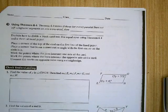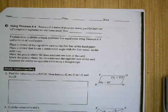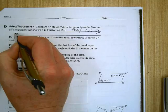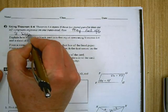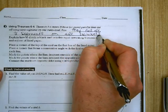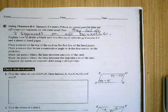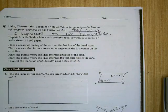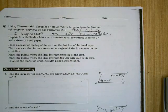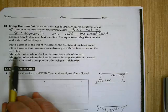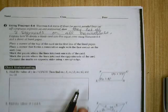Okay. Next page. Using theorem 6-4. Explain how to divide a blank card into 5 equal rows using theorem 6-4. Place a corner of the top of the card on the first line of the paper. Place a corner that forms a consecutive angle on the sixth line. Mark the point. We're not going to do that part. We're going to go down here. We're going to check our understanding here.